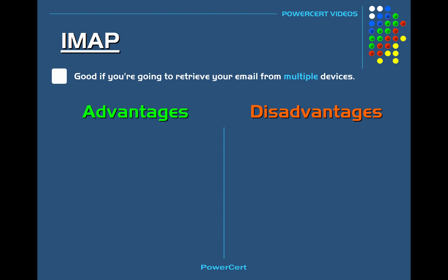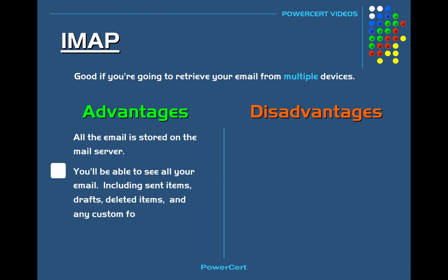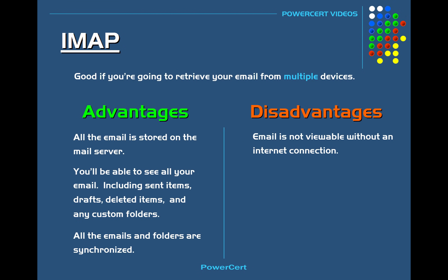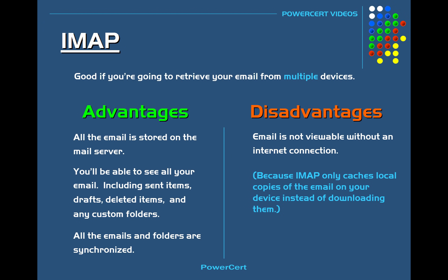IMAP is good when you're going to retrieve your email from multiple devices. An advantage is that all email is stored on the mail server, so whether you're using an email client or webmail, you'll see all your email including sent items, drafts, deleted items, and custom folders — all synchronized across every device. A disadvantage of IMAP is that you will not be able to view your emails without an internet connection, because IMAP only caches local copies rather than fully downloading them. However, some email clients offer an option to have IMAP download the emails to your device instead of just caching them.